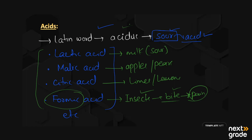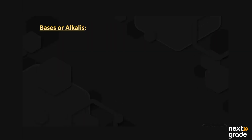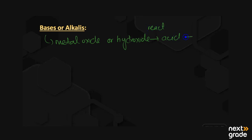Acids may also be found in aqueous solutions — that is a property of acids. Next, we have bases or alkalis. A base is any metal oxide or we can say a hydroxide that reacts with an acid. By reacting with the acid it produces water and salt. Bases are known as alkalis and they have a bitter taste.